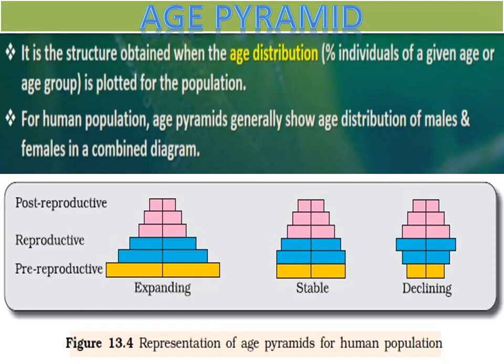For human population, age pyramids generally show the age distribution of males and females in a combined diagram. No separate diagrams are made for male and female. In a combined diagram, we show all the males and females of an age group together. There are three types of age pyramids for human population, as shown in this picture: expanding type, stable, and declining.